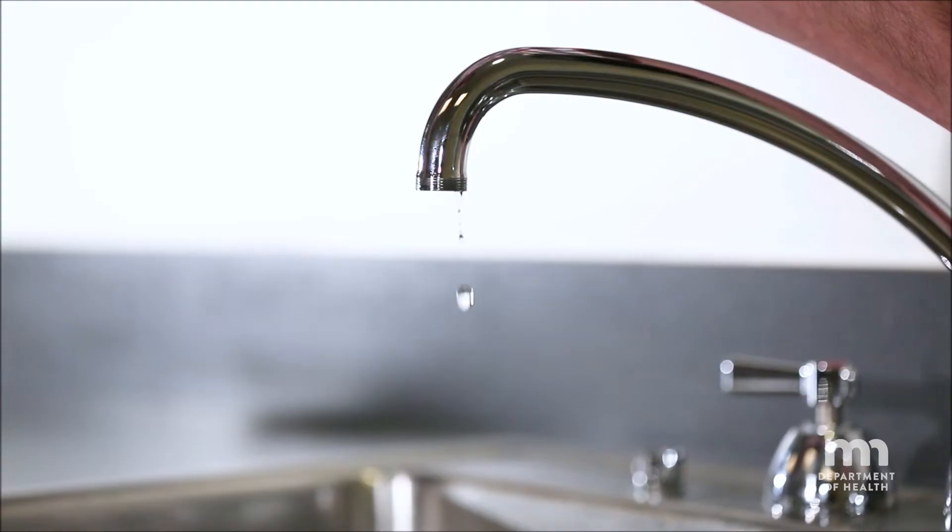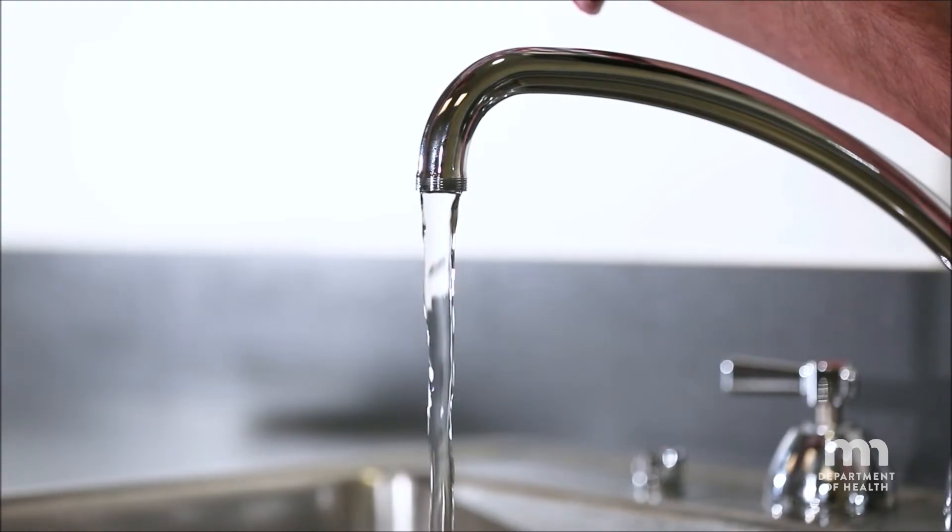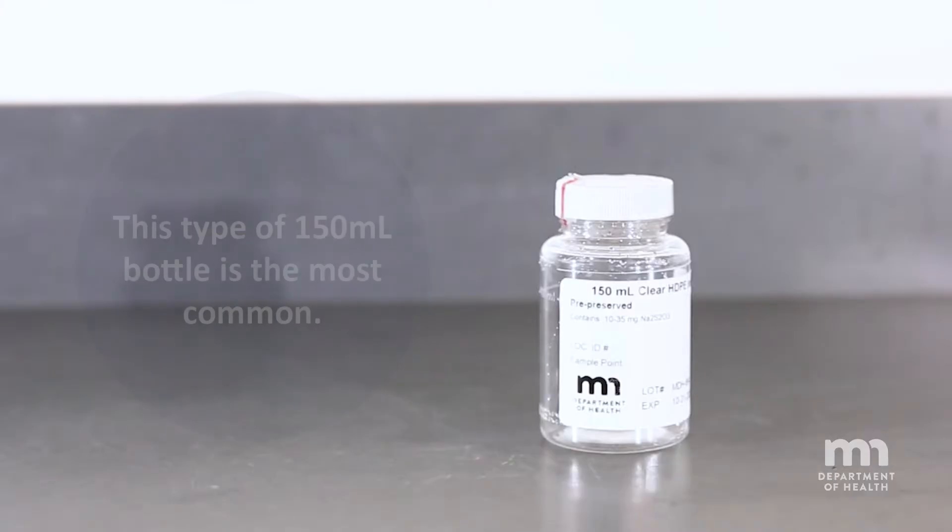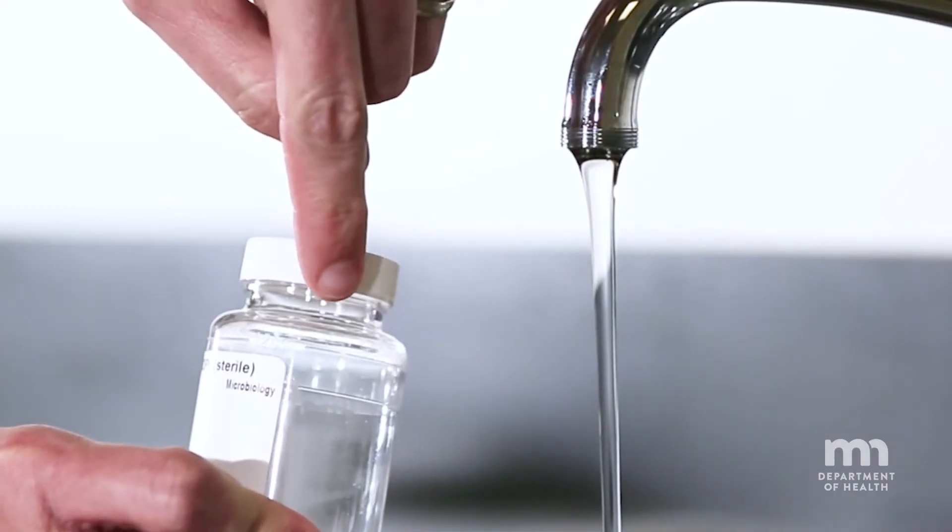When you're ready to take the sample, establish a smooth, steady stream of water. If you have a 150 milliliter bottle, which are more common, the bottle must be filled so the water level is in between the two lines.